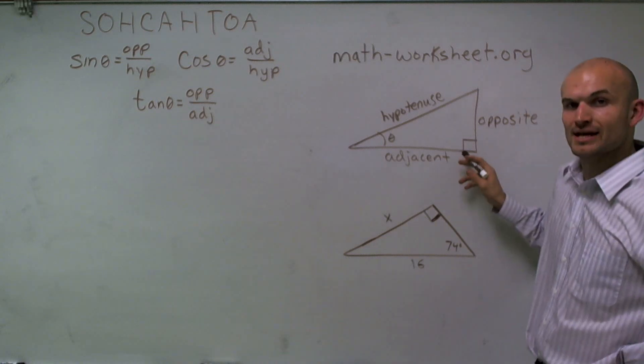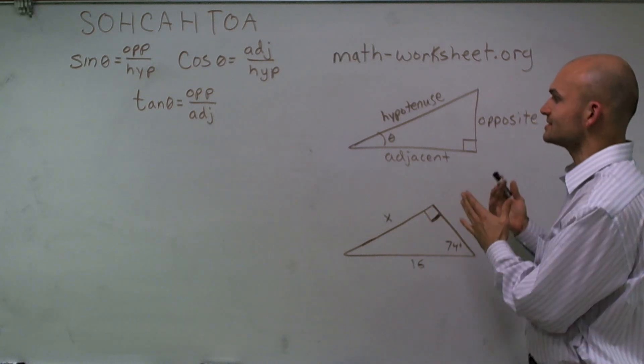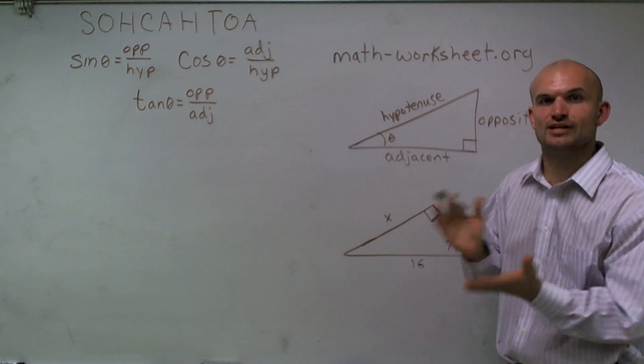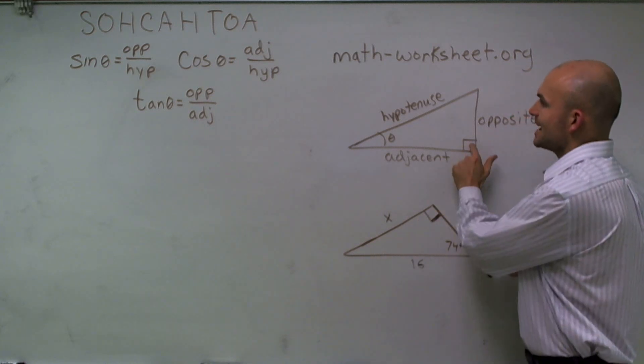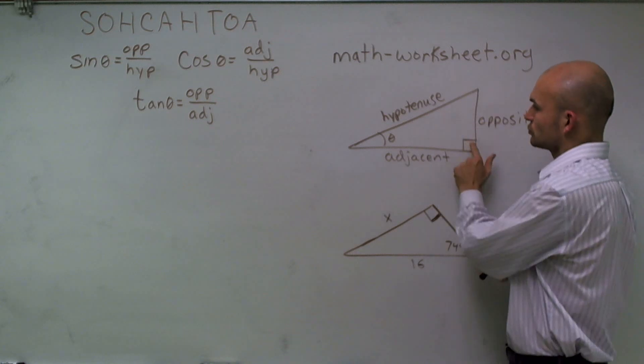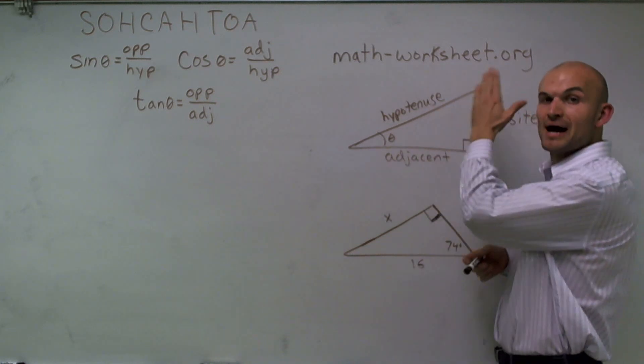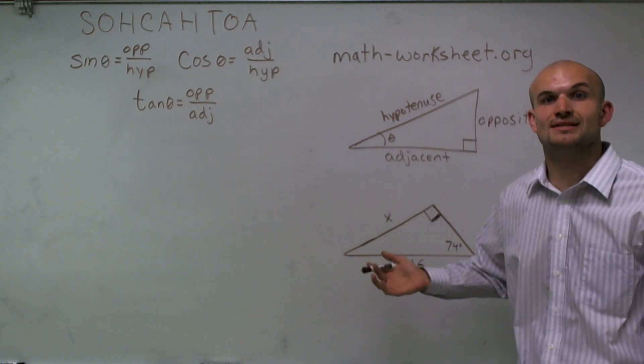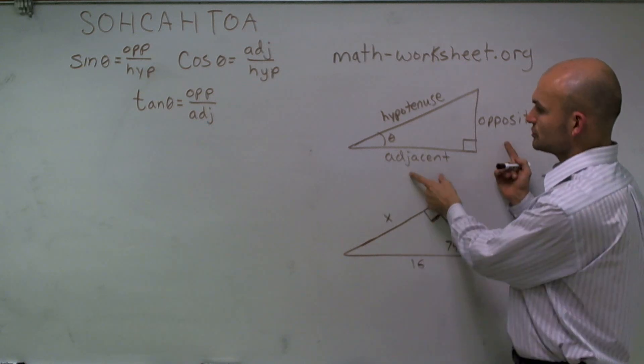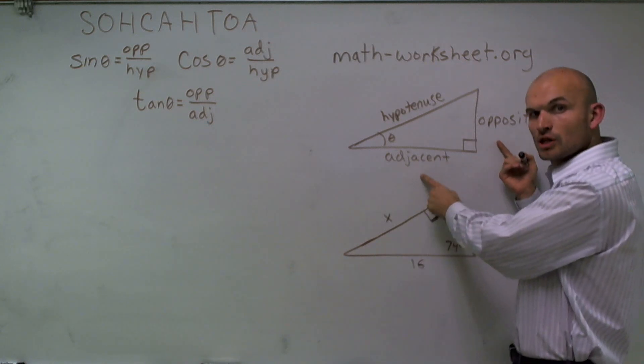When we have a right angle, that tells us certain characteristics about the sides of the right triangle. The side length that is across from the right angle is what we call the hypotenuse, which is going to be the longest leg of your right triangle. The other two side lengths are what we call the legs of the triangle.